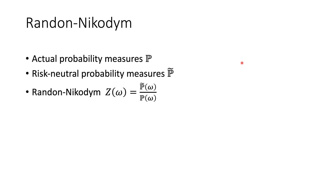Given these two concepts, we can talk about the Radon-Nikodym derivative. The Radon-Nikodym is just a random variable Z, which is the ratio of the risk-neutral probability to the real-world probability — and that's all there is to it.